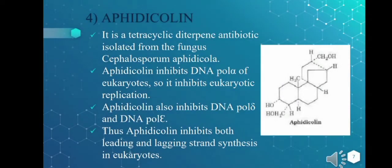The fourth inhibitor is aphidicolin, a tetracyclic diterpene antibiotic isolated from the fungus Cephalosporium aphidicola. Aphidicolin inhibits DNA polymerase alpha of eukaryotes and thereby inhibits eukaryotic replication. It also inhibits DNA polymerase delta and DNA polymerase epsilon, thus inhibiting both leading and lagging strand synthesis in eukaryotes.